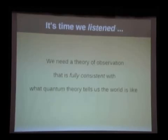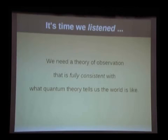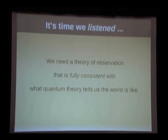I think it's time we listened to quantum theory and asked: what is quantum physics actually telling us the world is like? And how can we build a theory of observation that's fully consistent with what quantum theory is telling us? I don't claim to be able to build that complete theory, but I'd like to point in the direction of what that theory might look like.